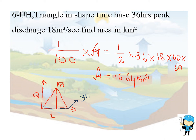We already know the formula to calculate the area of a triangle, that is half into base into height. Here the base is time, that is 36 hours - we need to convert that into seconds, so 36 times 60 times 60. Height is the peak discharge, 18 cubic meters per second, and the area for 1 centimeter.